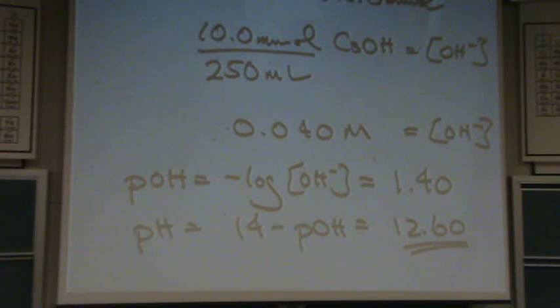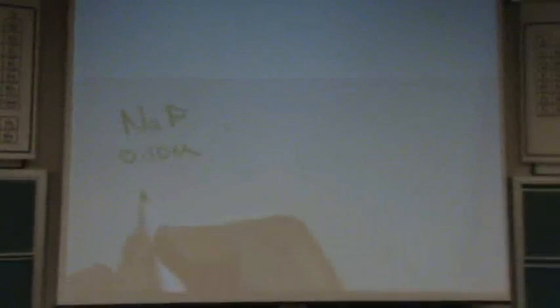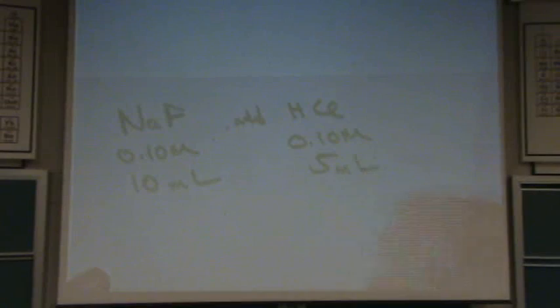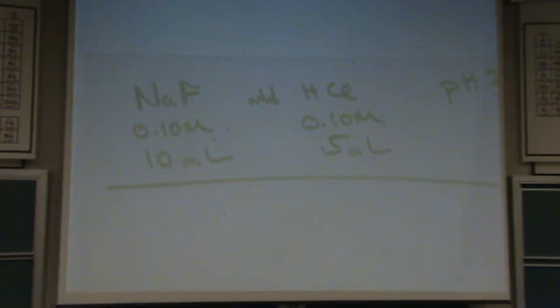Now let's try another one. Okay. Let's try this one. So you just want to get comfortable doing this kind of stuff. NaF, and this has 0.10 molar, and let's say this is 10 milliliters. And we have HCl added, and this is 0.10 molar, and 5 milliliters. I want to find the pH again. So I always use the same procedure that you just saw a second ago on my flow chart. Step one, identify the type.